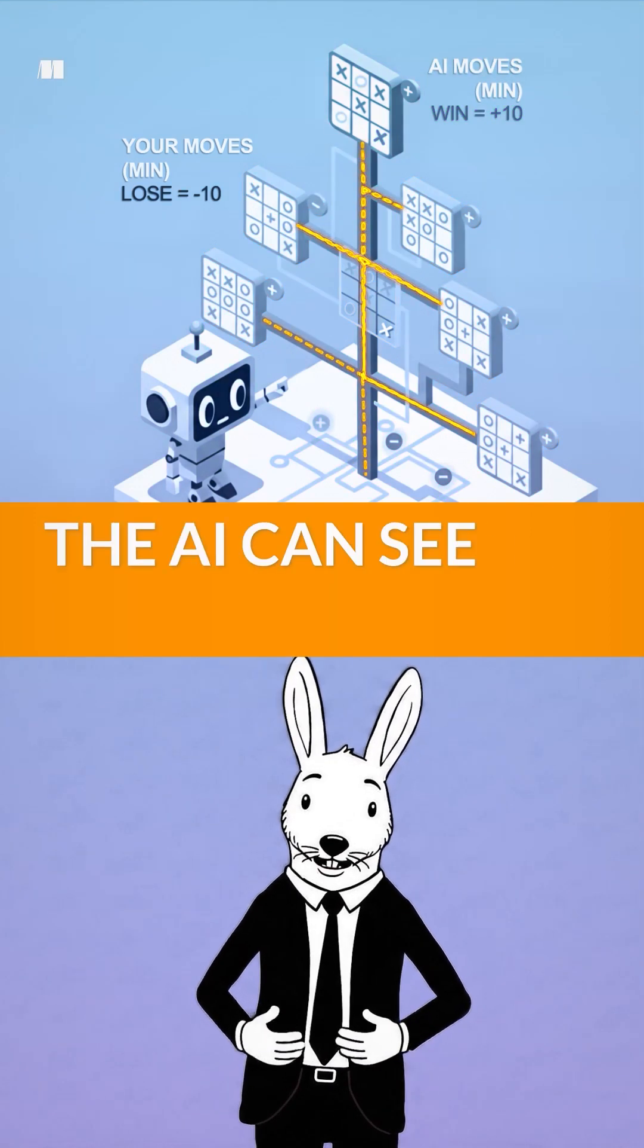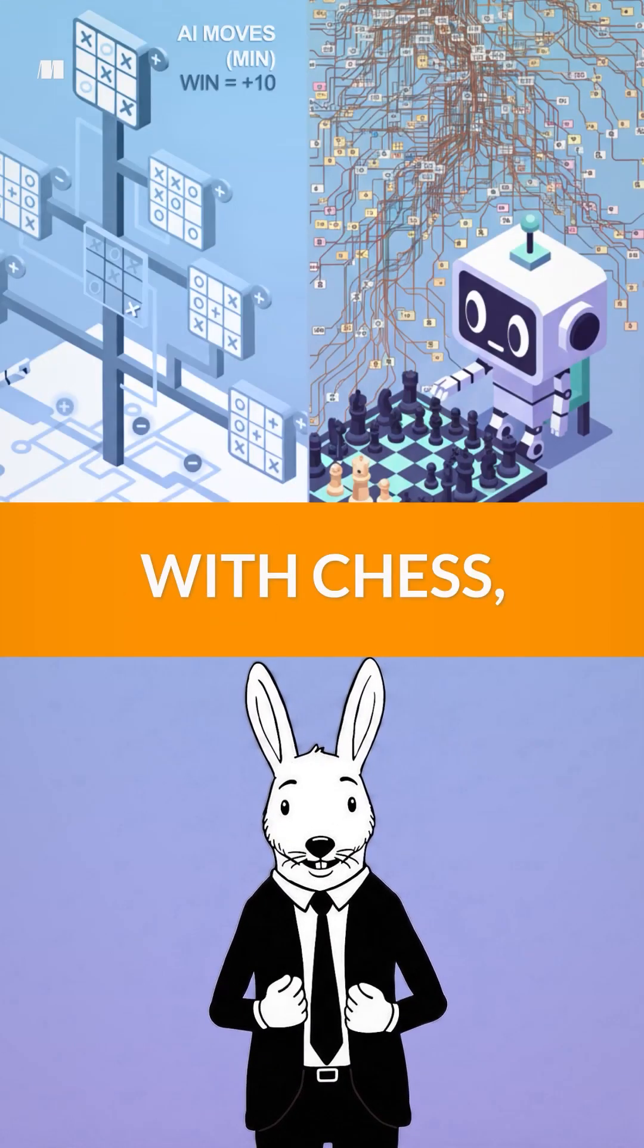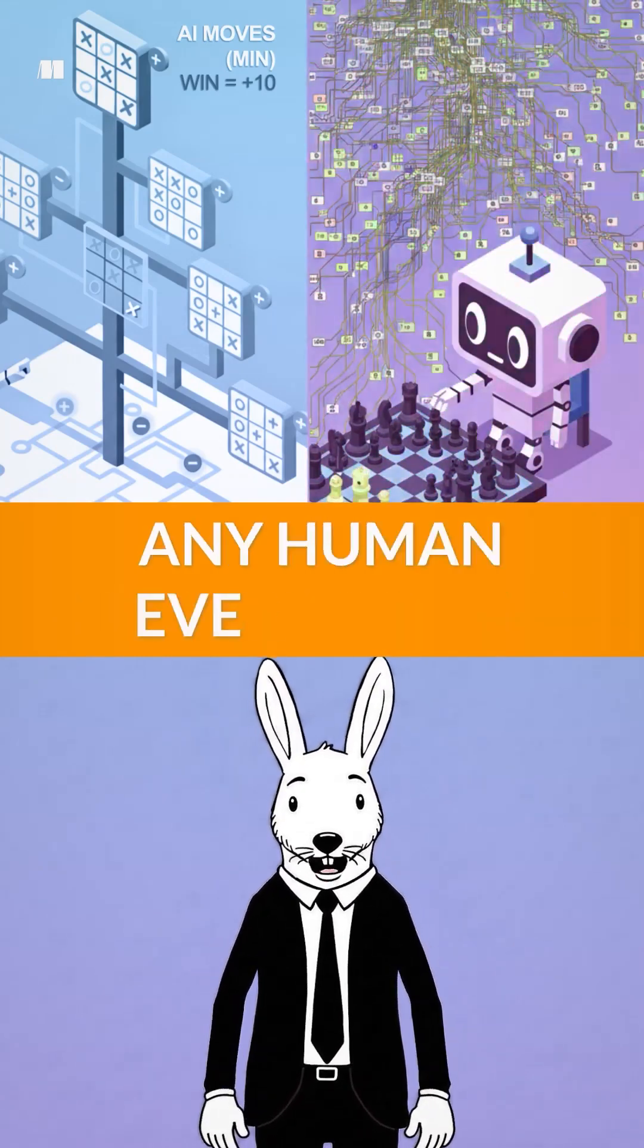With Tic-Tac-Toe, the AI can see the whole future. With chess, it just sees deeper and more perfectly than any human ever could.